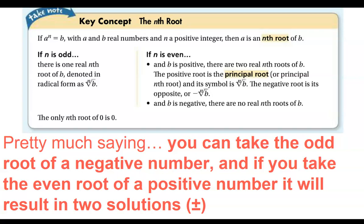We're looking over our radicals. With radicals we have different indexes that tell us the root. We have this chart: if a to the power of n equals B, with a and B being real numbers — meaning we're not doing imaginary numbers — and n is positive, then a is the nth root of B. So whatever number is in that index spot is the root that you are taking.